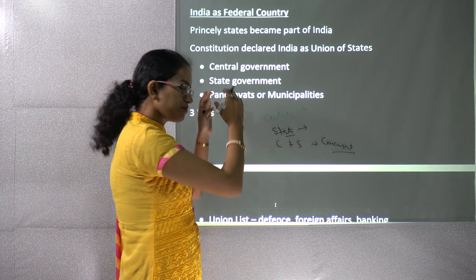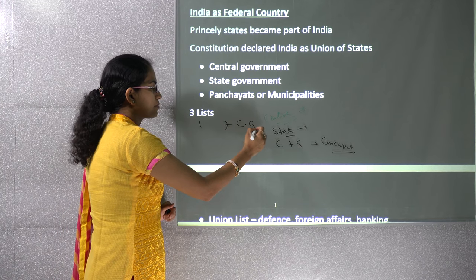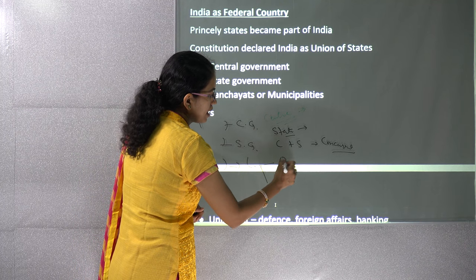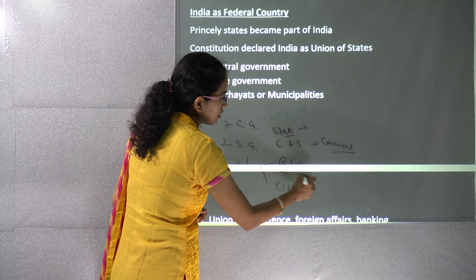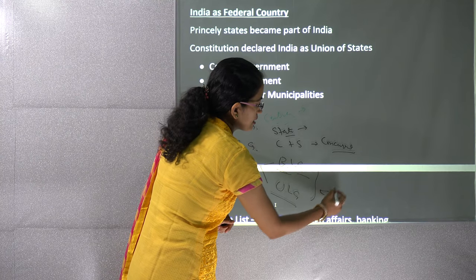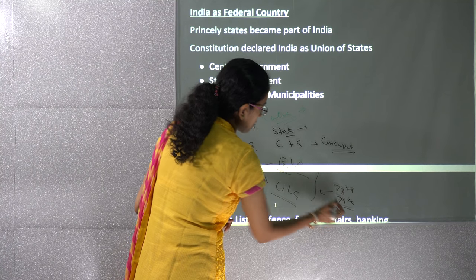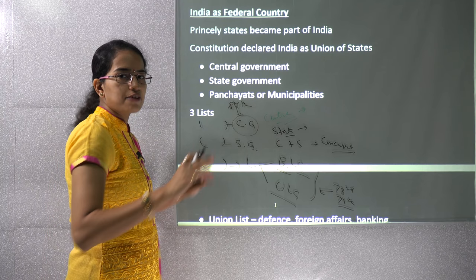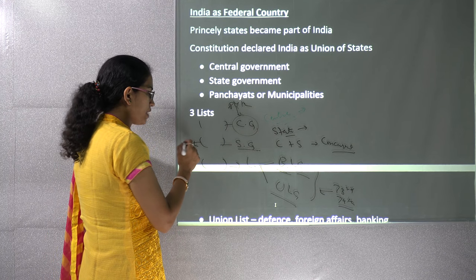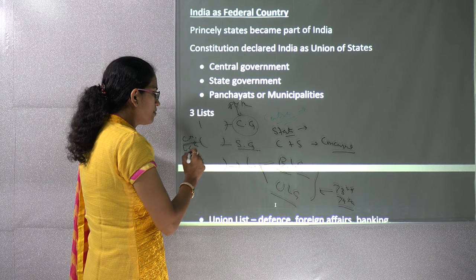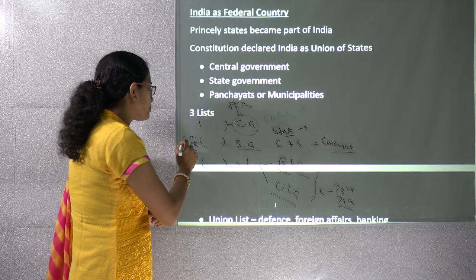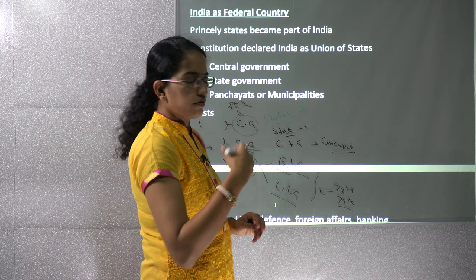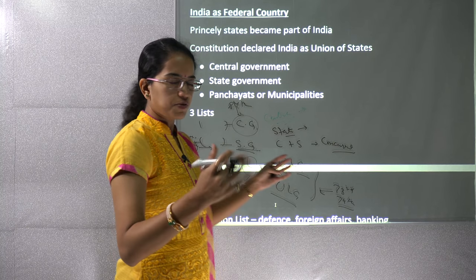In terms of government structure, at the center you have the central government; then the state government; and then local government, which can be rural local government (RLG) or urban local government (ULG), established under the 73rd and 74th Amendment Acts. At the center we have the Prime Minister, President, and Parliament. At the state level, we have the Chief Minister, Legislative Assembly, Vidhan Sabha, and Vidhan Parishad in certain cases. At the local level, you have the village panchayat and panchayat samiti.